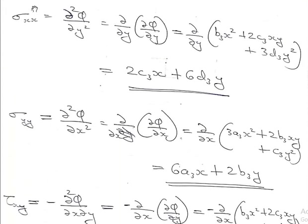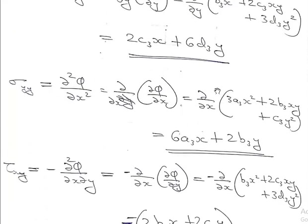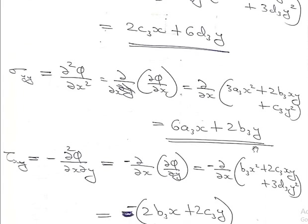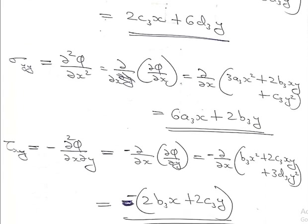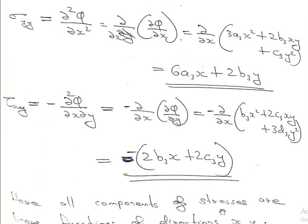Sigma X is 2C3X plus 6B3Y. Sigma Y is 6A3X plus 2B3Y. Tau X is minus 2B3X plus 2C3Y.